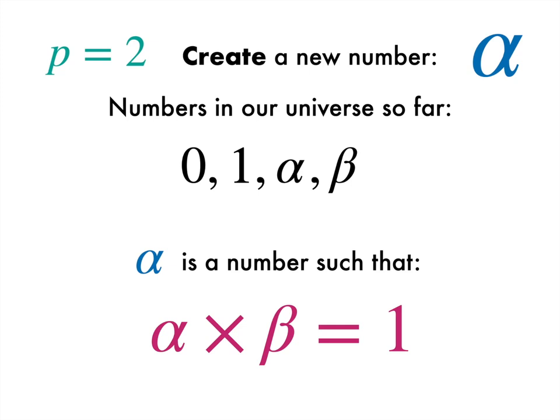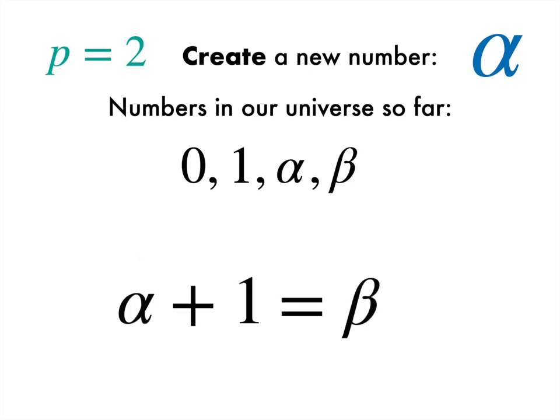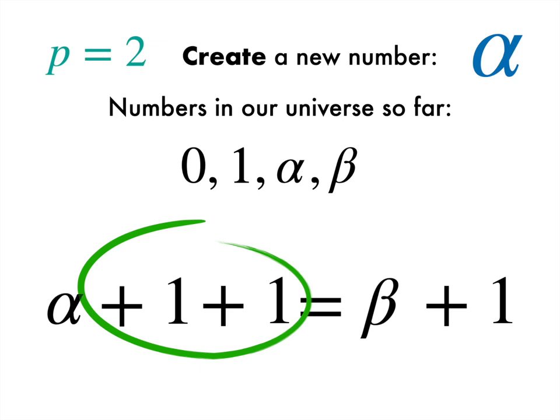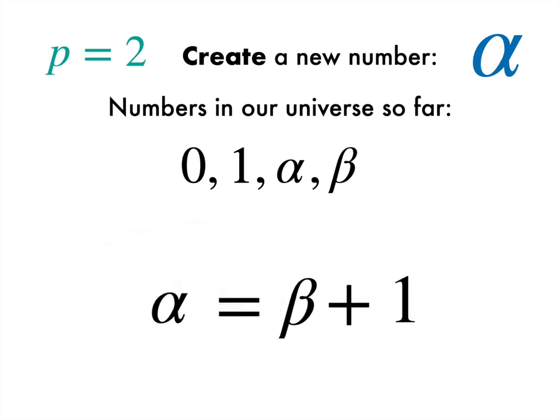Right, so let's fiddle with this and see what more we can say. Well, if alpha plus 1 is beta, then if I add 1 onto both, I get the following. But those two 1s, well, they add to 2, and 2 here is 0, so this side is just alpha. So somehow, going 1 up from beta brings us back to alpha.